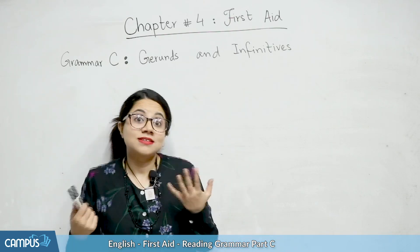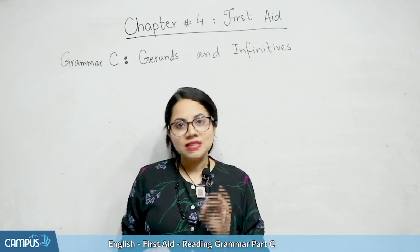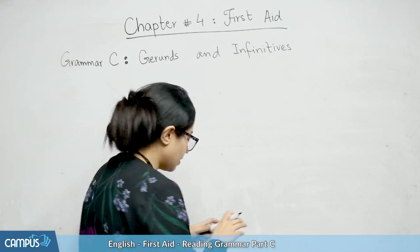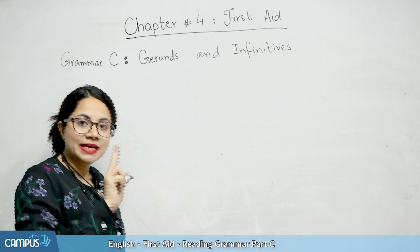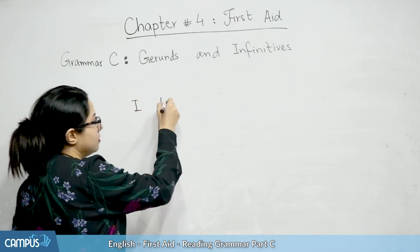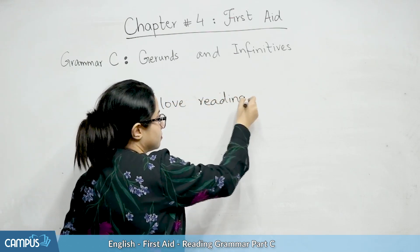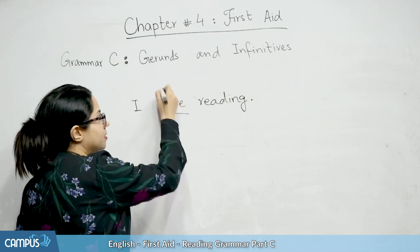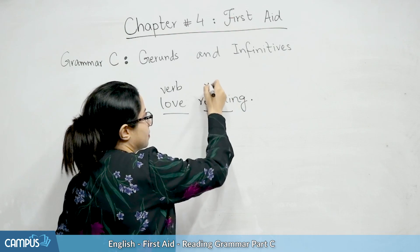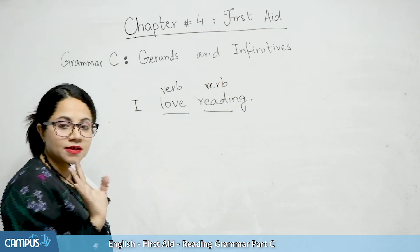People think this topic is difficult, but this is a very easy solution. Gerunds are when we have two verbs. For example, 'I love reading.' Love is also a verb, reading is also a verb. So, I love reading.